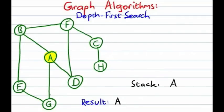We're going to visit the first of these in alphabetical order, which is B. So we take vertex B, push it onto the stack, visit it, and mark it as visited. Then we repeat the procedure: we look at the vertex at the top of the stack, B, and take a look at all of the adjacent unvisited vertices. A has already been visited, so that just leaves E and F.